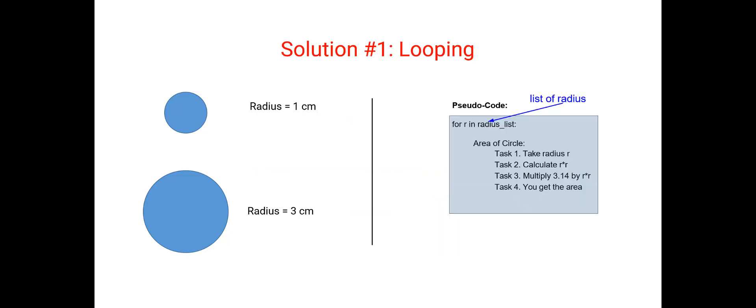So one approach would be you can just collect all of your friend's circles radius in a list, say radius list, and then use a for loop to loop over all the radius that are present in this list and calculate the area of each of these circles.